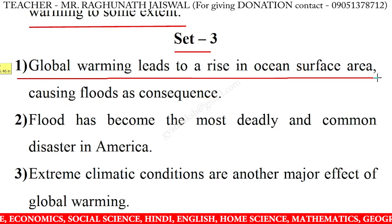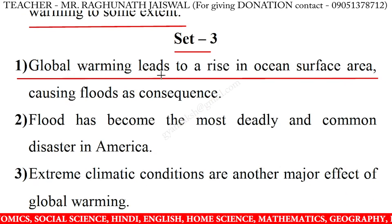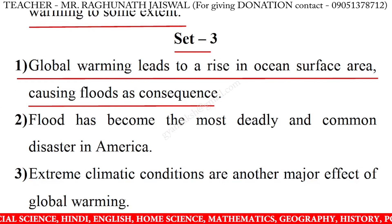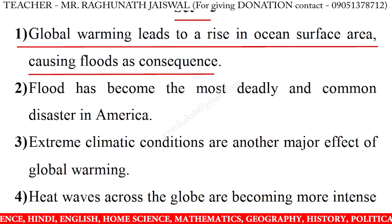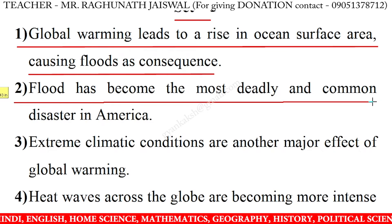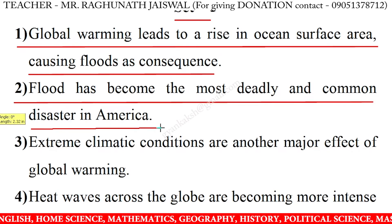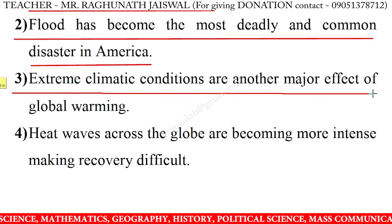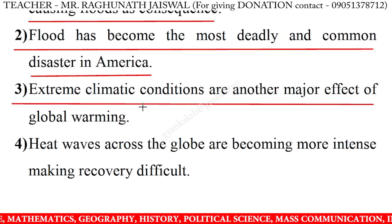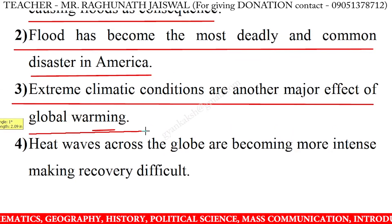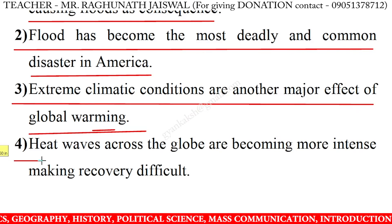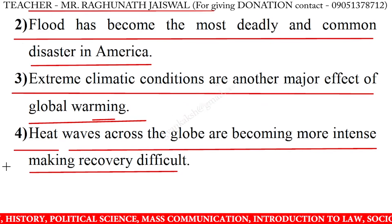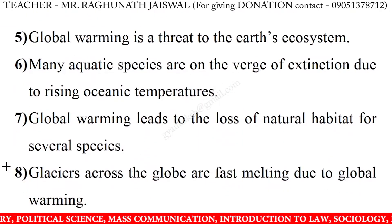Global warming leads to a rise in ocean surface area, causing floods as a consequence. Flood has become the most deadly and common disaster in America. Extreme climatic conditions are another major effect of global warming. Heat waves across the globe are becoming more intense, making recovery difficult.